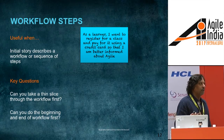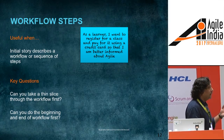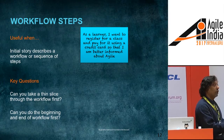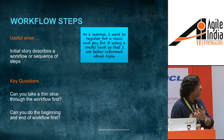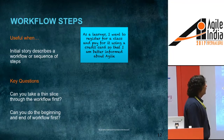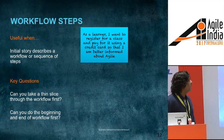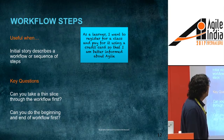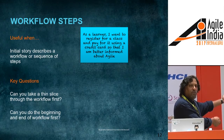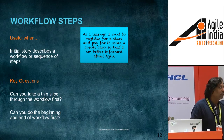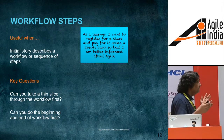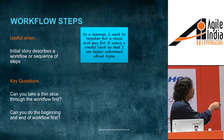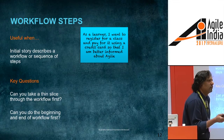The first splitting strategy is workflow steps — useful when a story describes a sequence of steps the user must do to realize an outcome. Example: as a learner, I want to register for a class and pay for it using a credit card so that I'm better informed about Agile. Looking at that story, what are the workflow steps? Registration — looking for a class, registering, payment. Payment itself can be broken down into payment method, reviewing the order, post-payment acknowledgement, receipt, notifications.